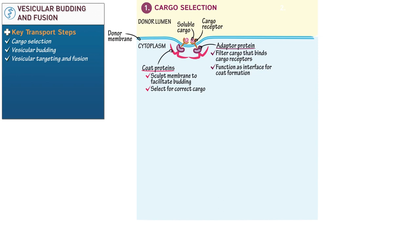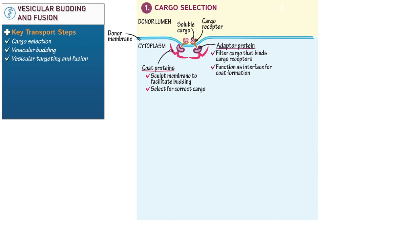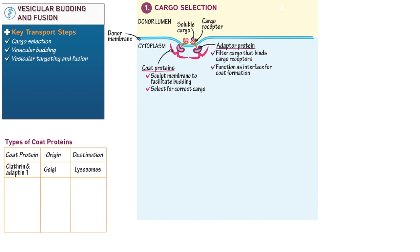Specific coat proteins refer to specific vesicular transport pathways within the cell. Start a chart to learn the different kinds of coat proteins, their membranes of origin, and the destinations of the vesicles that they help shape. Indicate that clathrin proteins originate in the Golgi and are involved in vesicular transport to lysosomes, and that these clathrin proteins are specifically paired with adaptin-1 adapter proteins. Adapter proteins are often considered inner coat proteins.